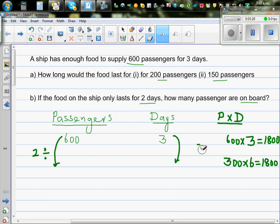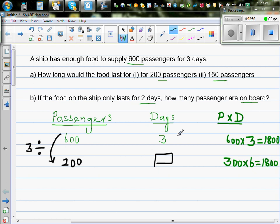So let me change the question now. The question was, if there are 200 passengers, it will last for how many days? So here the answer is, this is divided by 3, 600 divided by 3 is 200. So you have to multiply this by 3. So the answer is 9.